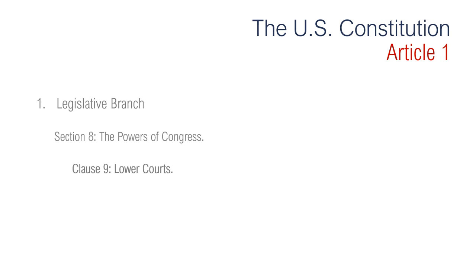Section 8, Clause 9 is regarding the lower courts. Congress has the authority to set up all federal courts except the Supreme Court, and they have the authority to decide what cases those courts will hear. Section 8, Clause 10 is regarding the punishment for piracy. It says to define and punish piracies and felonies committed on the high seas and offenses against the law of nations. It means Congress has the authority to prohibit the commission of certain acts outside U.S. territory and to punish certain violations of international law.